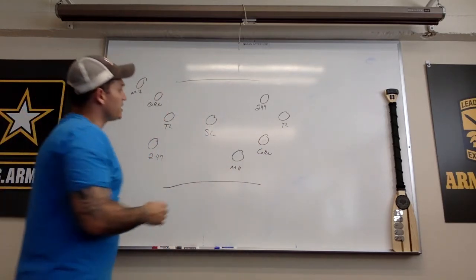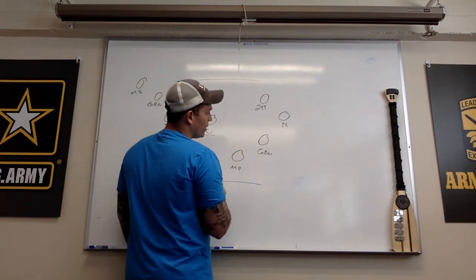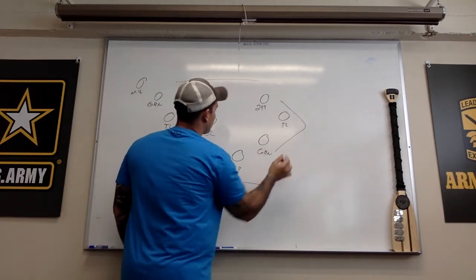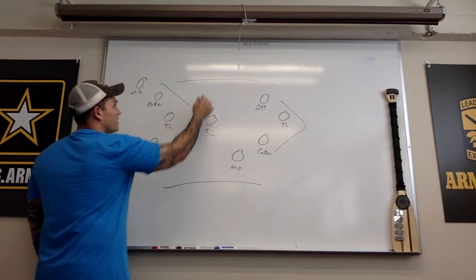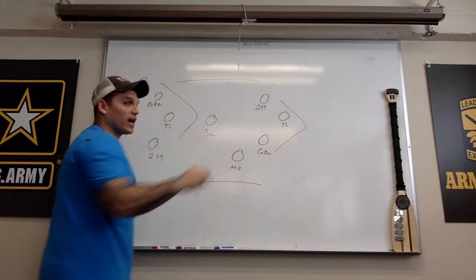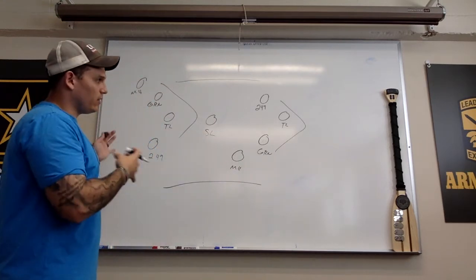Now this formation, as you can see, we are kind of parallel to each other or we are in a column. This is a squad column fire team wedge. This is the fire team wedge and this denotes that we were traveling in a column because we're pretty much parallel in the same formation moving together.